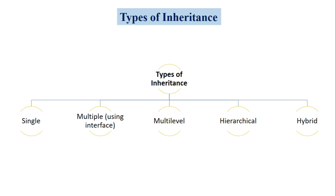Hey everyone. In today's lecture we are going to discuss one of the important types of inheritance, and that is hierarchical inheritance with example. As you know, there are 5 types of inheritance in C#.NET — single, multiple, multilevel, hierarchical, and hybrid. In the previous lecture we already discussed single and multilevel inheritance with example, and today we are going to discuss hierarchical inheritance. So before starting the example, let's see what is meant by hierarchical inheritance.